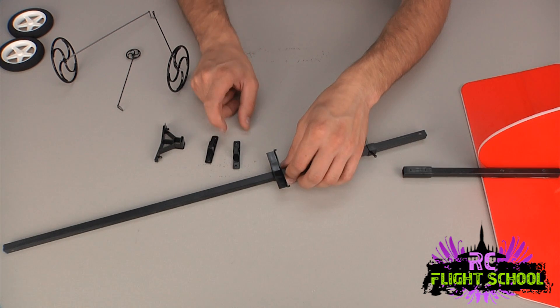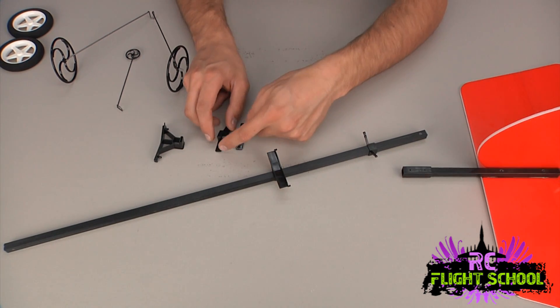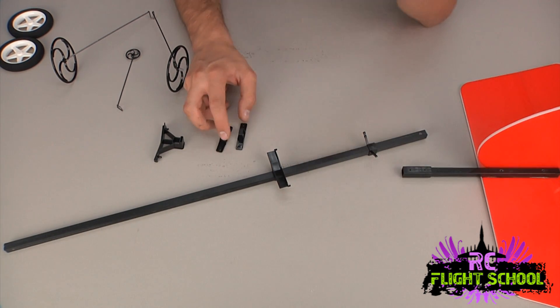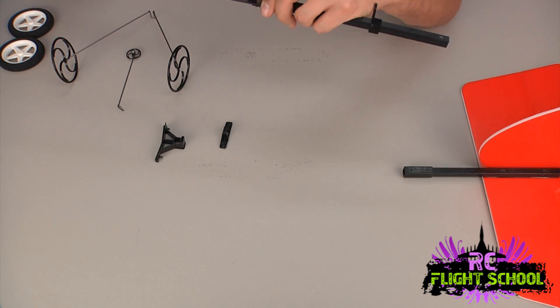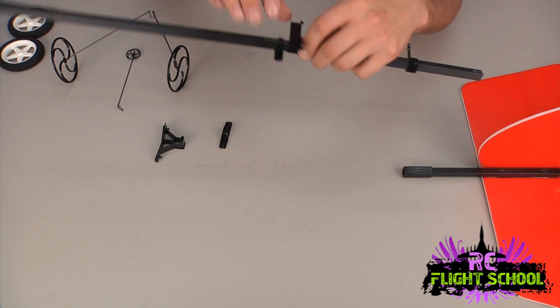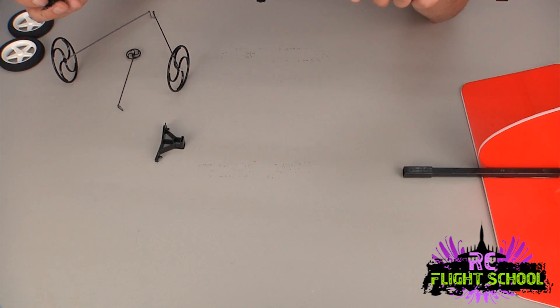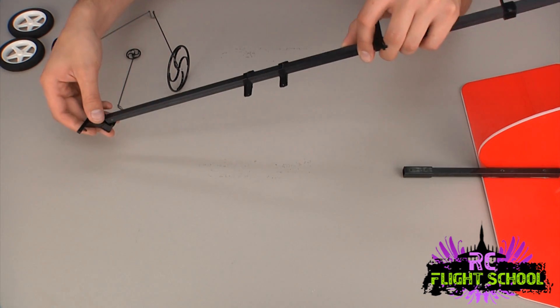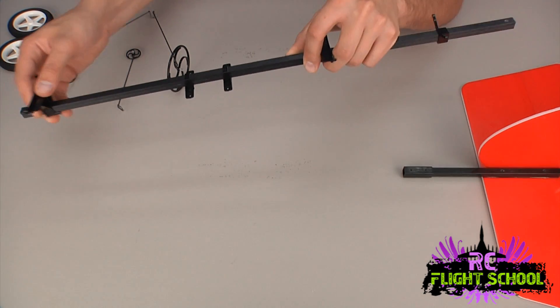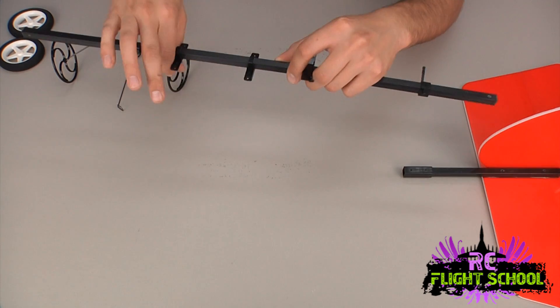These are the servo mounts and again, these do go on a certain way too. So keep in mind which way you're going in terms of the holes you have to use. I'm going to be using some HS55 servos and so I know which way I want these on here already. Slide them down. That guy and then the front wing mount. Again, keep an eye on orientation here.